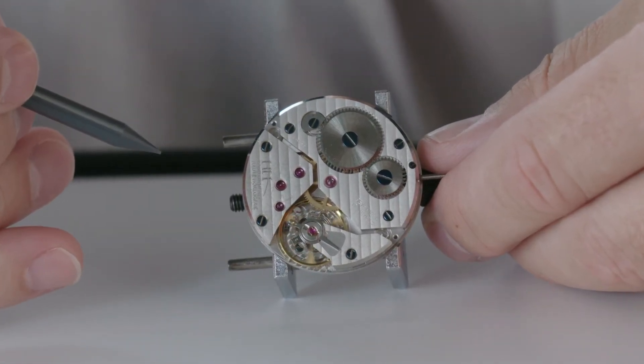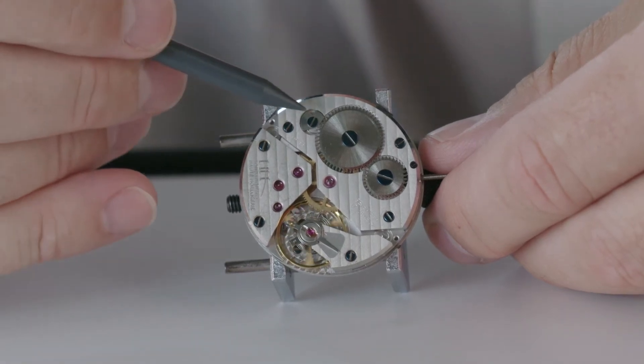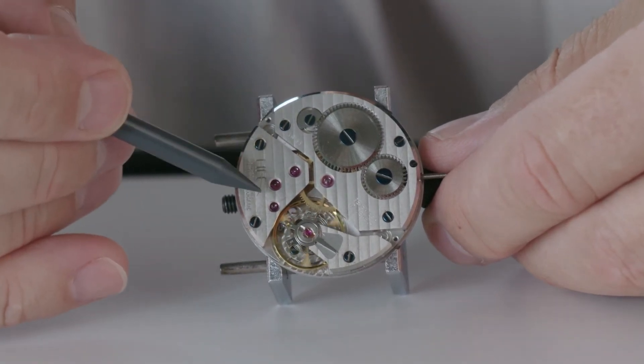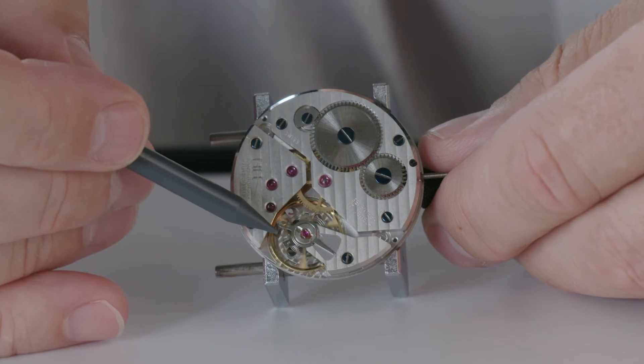In every mechanical movement, we have three main parts. The energy part, the transmission, and the regulating part.